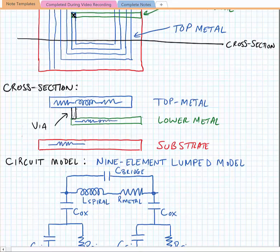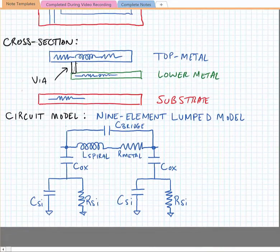Now we can extract what we call a nine element lumped model using these parasitic elements. And the nine element lumped model consists of our spiral inductance, the metalization resistance, some capacitance down to the substrate, some resistance in the substrate, and some shunt capacitance related to metal coupling to metal that bridges from the input terminal to the output terminal.